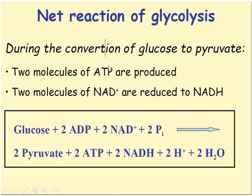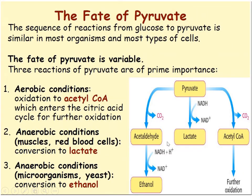The net reaction of glycolysis: during the conversion of glucose to pyruvate, two ATPs are consumed at the beginning and four ATPs are produced, giving a net gain of two ATPs. Additionally, two molecules of NAD⁺ are reduced to NADH.